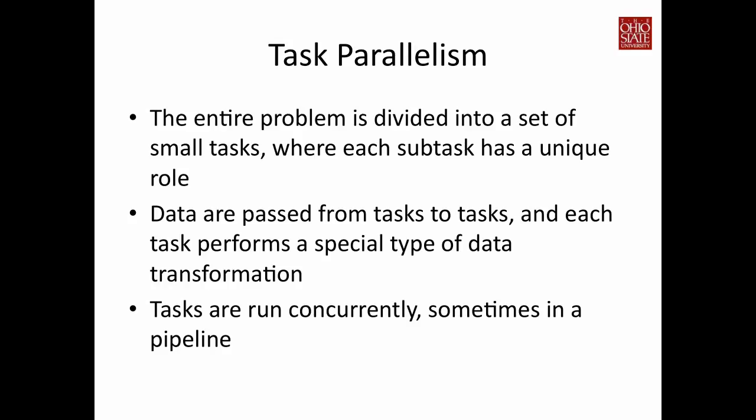The other type of parallelism is task parallelism. Instead of dividing the data, we divide the entire problem into a set of small tasks, typically in a particular order, where each task has a unique role with its own input and output. Data is passed from task to task, and you can consider each task as performing a special type of transformation. When you break your data into many pieces, you can start all the tasks concurrently, sometimes forming a pipeline. As long as every processor stays busy, you will get good speedup.